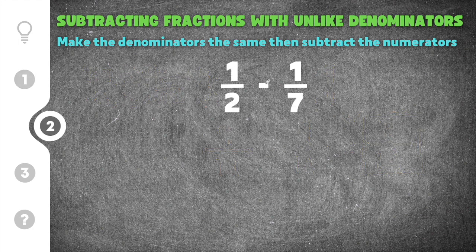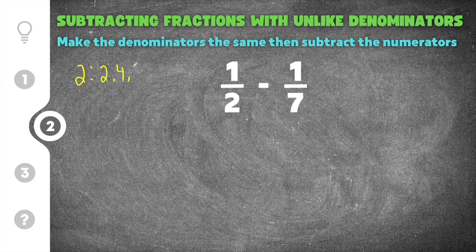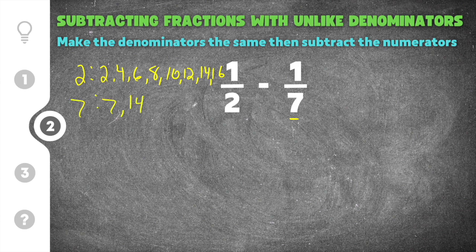Moving on to the second problem: 1 half minus 1 seventh. We need equal denominators, so we find the least common multiple. Taking multiples of 2: 2, 4, 6, 8, 10, 12, 14. And multiples of 7: 7, 14. We only need to go to 14 because both lists share 14. So our least common multiple is 14.